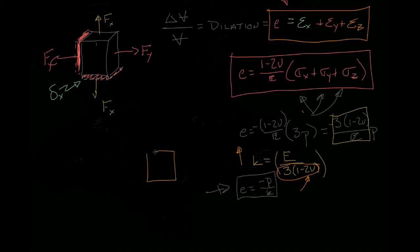Now let's take the opposite view. Now let's imagine that we're going to make k really small. So if k is really small, that means there's going to be a big dependence between pressure and the dilation.